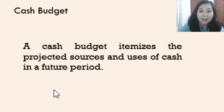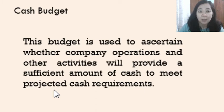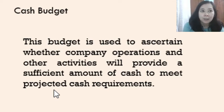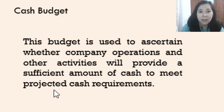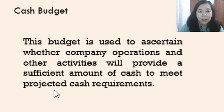The entity can determine the sources of additional funds needed. This budget is used to ascertain whether the company's operations and other activities will provide a sufficient amount of cash to meet the cash requirements. In a business entity, the main source of cash flow is from sales or cash sales. They might have other activities not closely related to their business that can also provide cash, such as sale of non-current assets, short-term loans, or sales of investments.